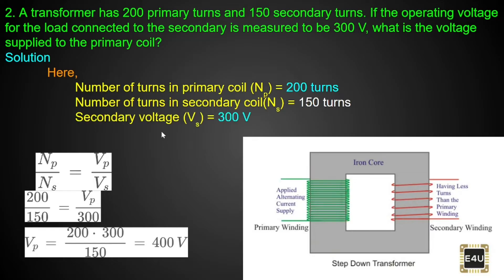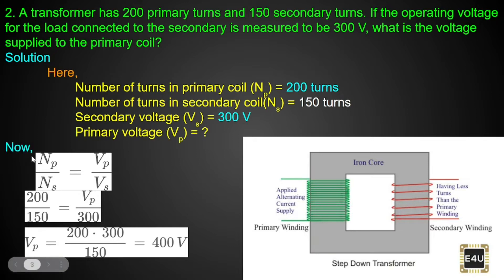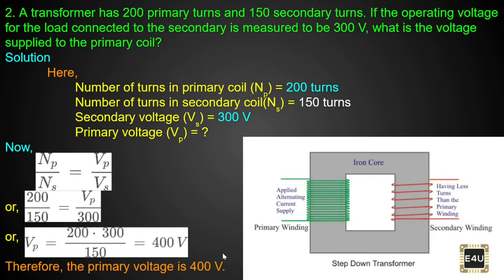We need to find the voltage supplied to the primary coil, Vp. Using the principle of transformer — Np by Ns equals Vp by Vs — we multiply Vp through and solve with simple calculation. The answer is 400 volts.